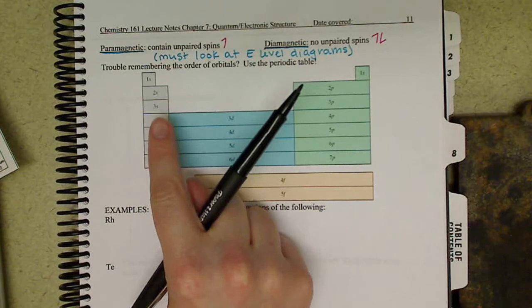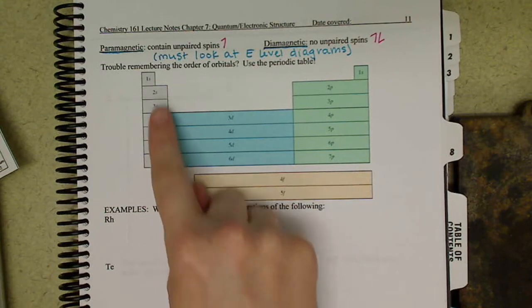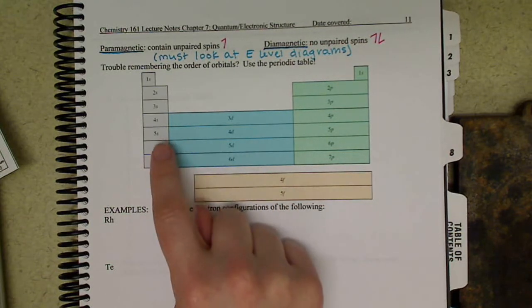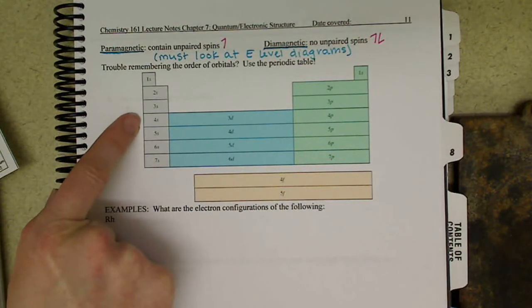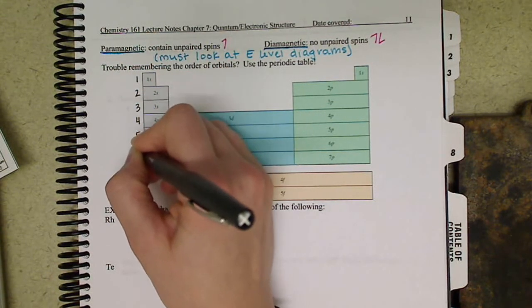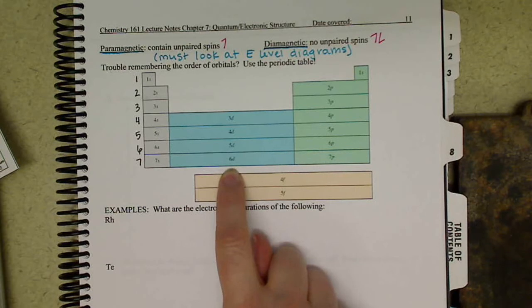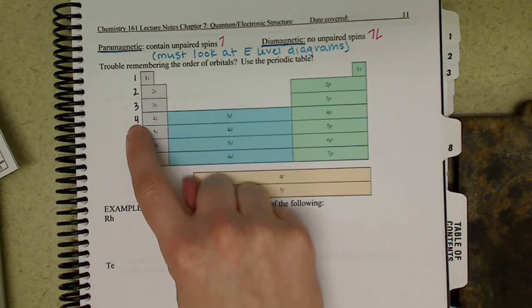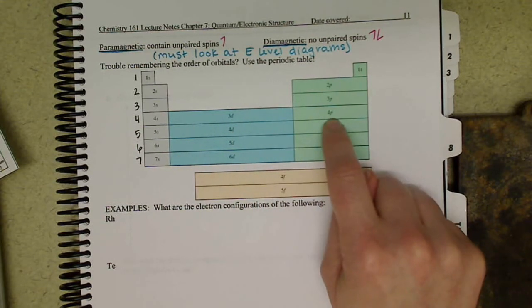So the two things that you need to remember when you're working with the periodic table: where your s orbitals are, your p orbitals, your d orbitals, and your f orbitals as well. Once you have those, you need to remember that your period level tells you what quantum level you're at, except for the d orbital users — so these are your transition metals, they actually drop down a quantum level for what period they're in. So we go 4s, directly across from that is the 3d, and directly across is then the 4p.